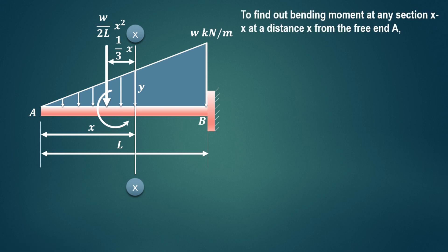Similarly, we'll find the general expression for bending moment at any section XX. The shear force at section XX is W upon 2L times x squared acting in the downward direction. We convert this UVL into a point load acting at the centroid of the triangular lamina.